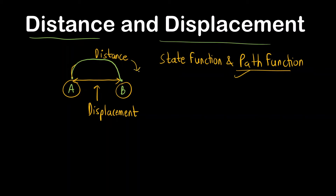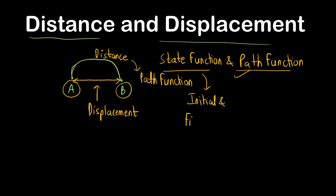We can think of distance as a path function, since it depends on the overall path followed. The state function refers to those properties which depend only on the initial and final states. So we can think of displacement as a state function.